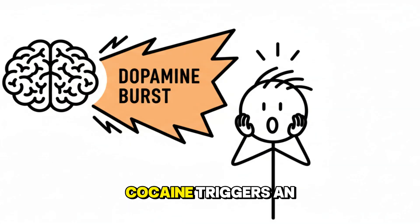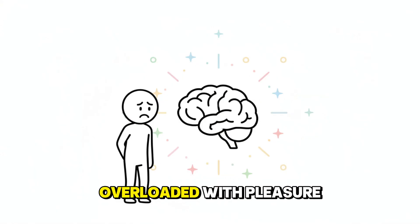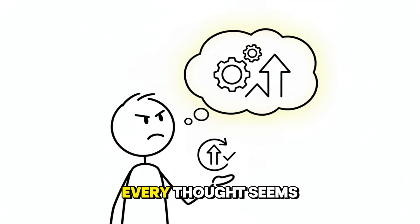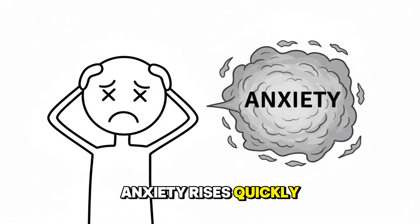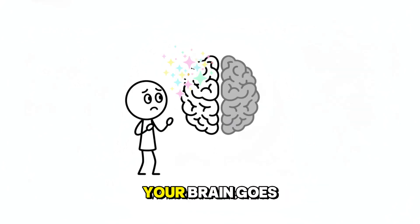Cocaine triggers an intense dopamine surge, not gradually, but instantly. The brain becomes overloaded with pleasure and confidence signals. You feel alert, sharp, and extremely capable. Every thought seems meaningful, every movement feels efficient. But this high is short-lived, and the crash that follows is equally intense. Anxiety rises quickly, motivation collapses. Fatigue appears suddenly. Your brain goes from overstimulation to emptiness.